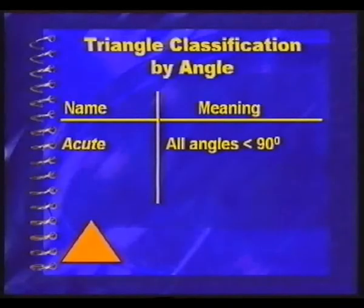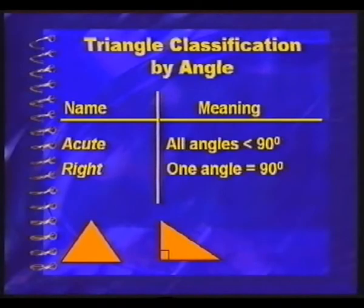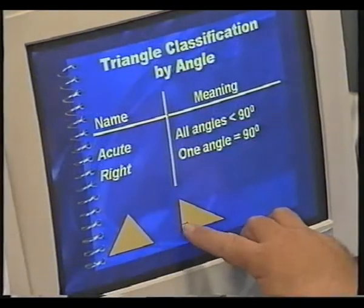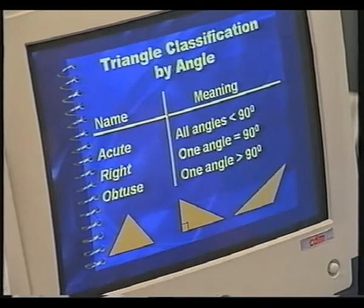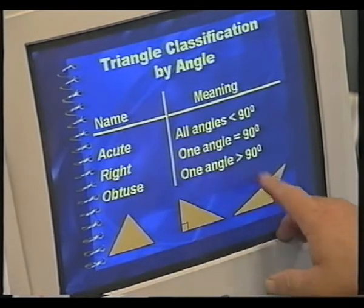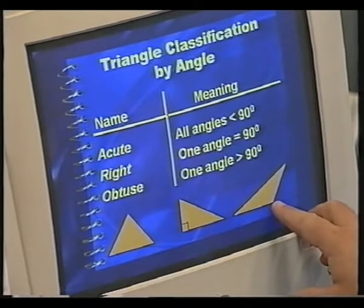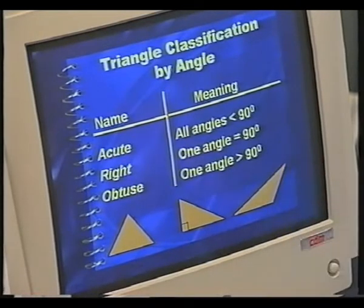Let's first of all have a look at classification by angle. You can have here an acute triangle if all the angles are less than 90 degrees. A right angle has one angle equal to 90 degrees, and we always use that symbol there. An obtuse triangle is one where one angle is greater than 90 degrees. That would be this angle over there. So that's classification by angle.